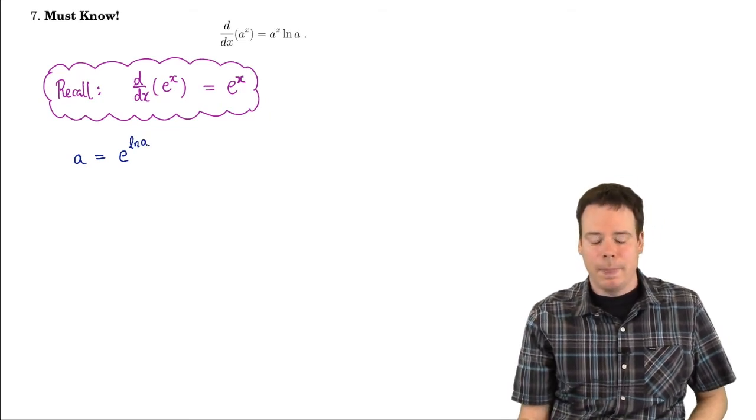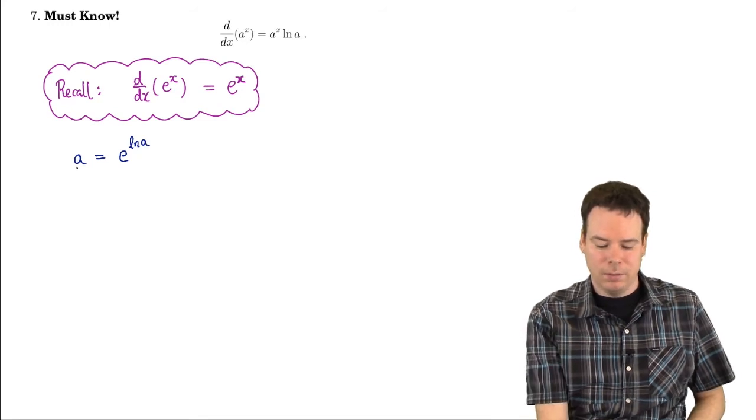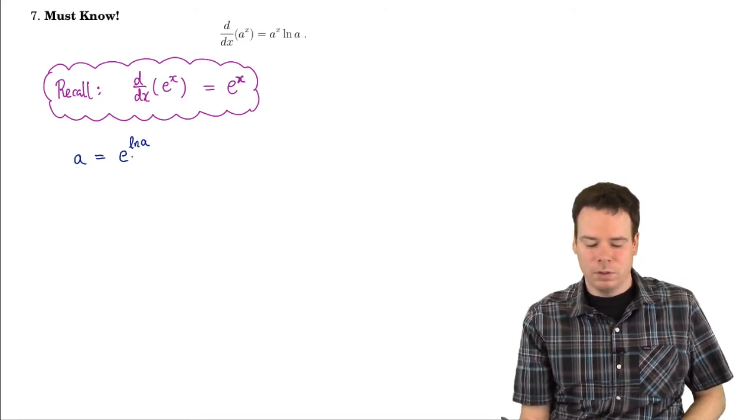If I take the natural log of a and I raise e to that number, then I just get back to a itself. This is because exponentials and logarithms are inverses to each other.